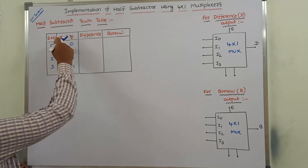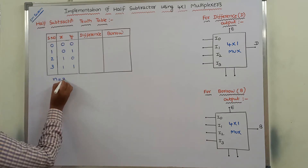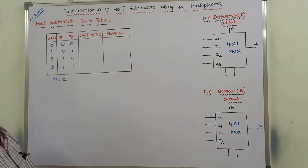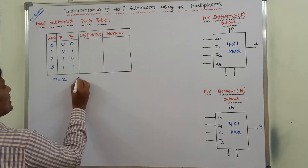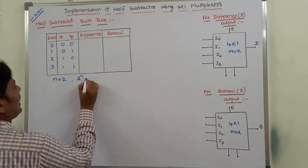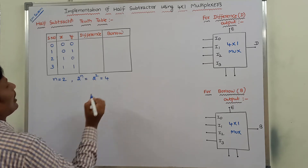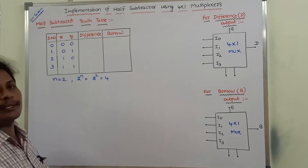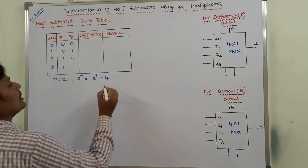How many number of inputs are there? There are 2 inputs, denoted by small n. N is nothing but number of inputs. With 2 inputs, how many number of possible input combinations exist? That is 2 power n number of possible input combinations. Here 2 power n value is equal to 2 power 2.